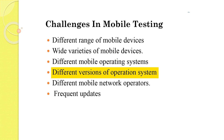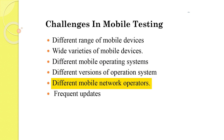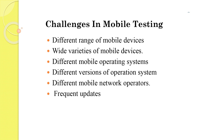Different versions of operating systems are also a challenge. We keep upgrading Android and iOS versions, so how do you make sure you have tested on all active versions? Different mobile network operators can also affect testing. There are frequent updates of the versions of the software. We should know which device, operating system, brand, version, release, network operator, and update we are currently testing on.